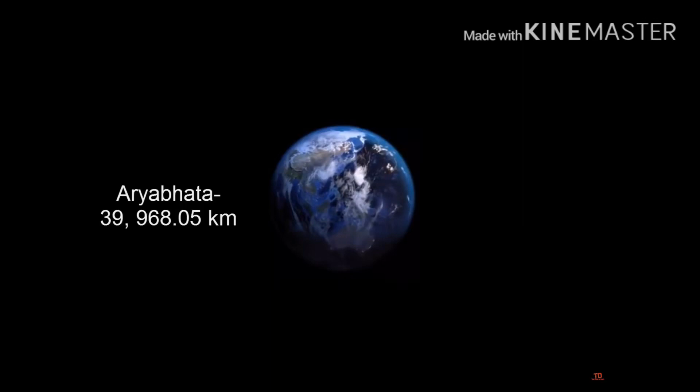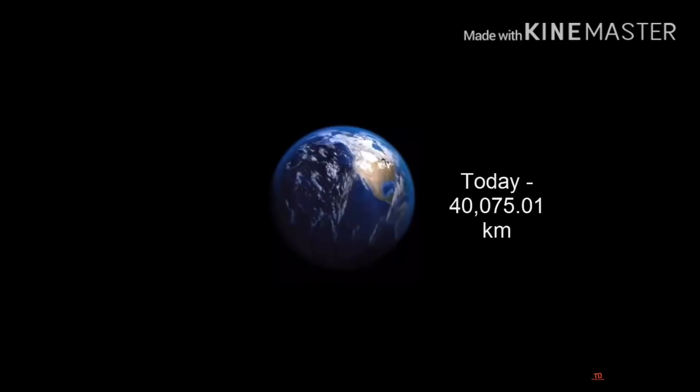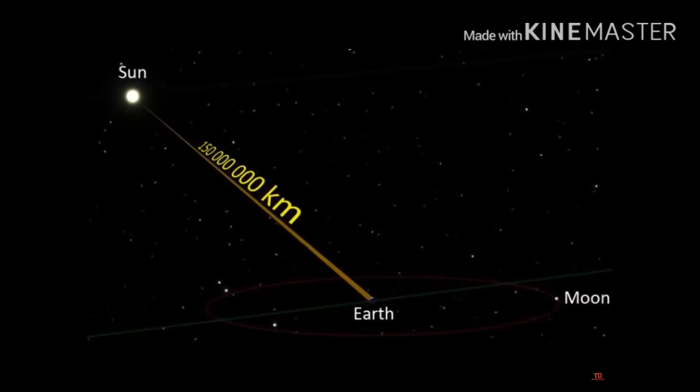This he has written in his book Aryabhatiyam that circumference of the earth is 39,968 km and shockingly it is matching with the present day circumference of 40,075 km. He also calculated the average distance between earth and sun which is also perfectly matching with present day values.